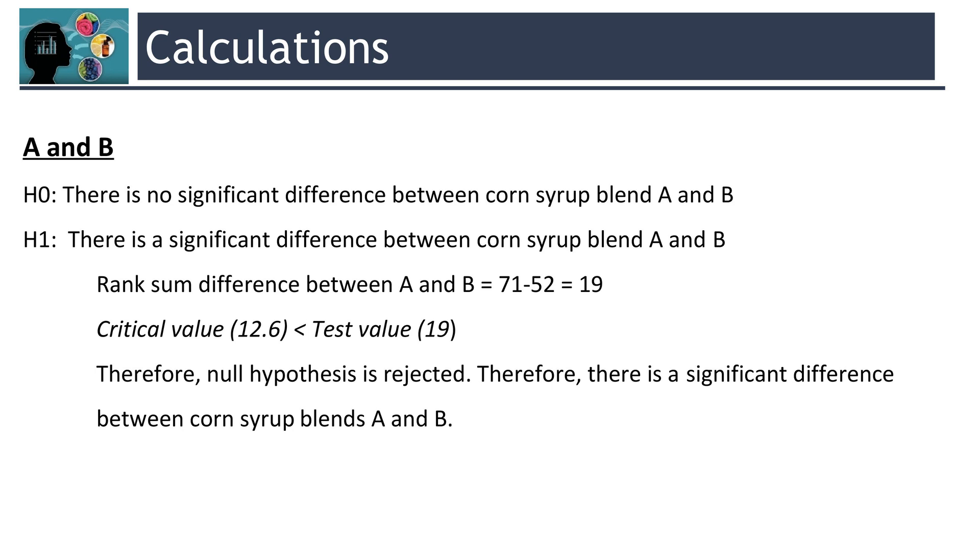And from previous calculation, we know that the critical value or HSD value is 12.6 and it is lower than the test value 19. That means null hypothesis is rejected. Therefore, there is a significant difference between corn syrup blend A and B.